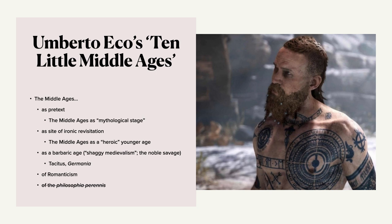He also talks about the Middle Ages of Romanticism — please note the capital R. I'm talking about the Romantic movement here, not romance as in love, although oftentimes Romanticism does include love. Romanticism as a movement is about emotion, about nature, about the individual, about adventure — it idolizes the medieval basically. Eco talks about the Middle Ages of Romanticism with its stormy castles and its ghosts, and this can overlap with the Middle Ages as a barbaric age and with the Middle Ages as pretext as well.